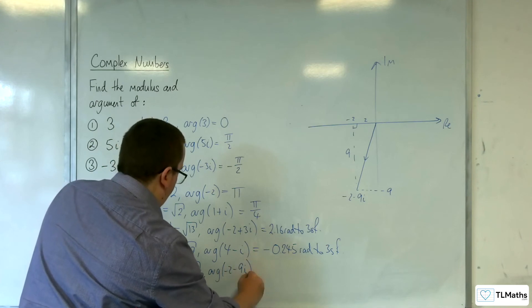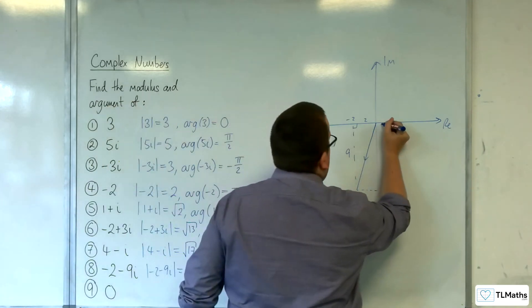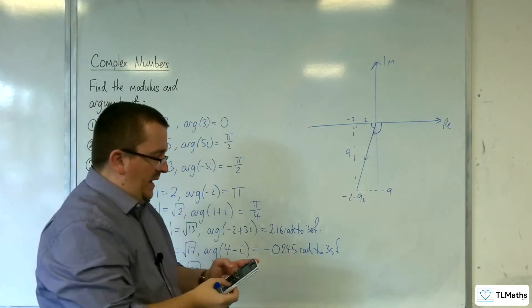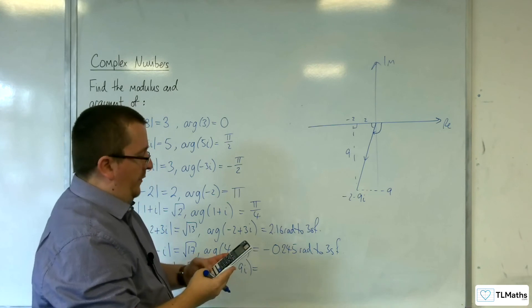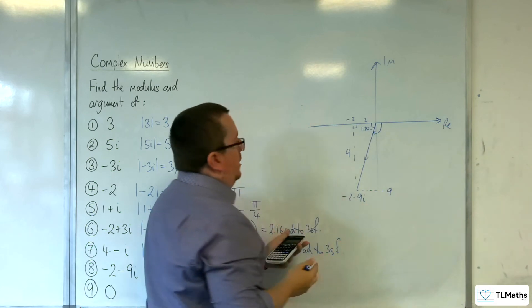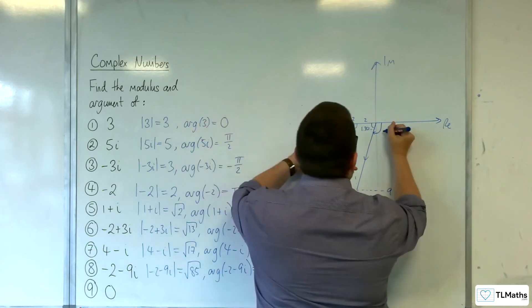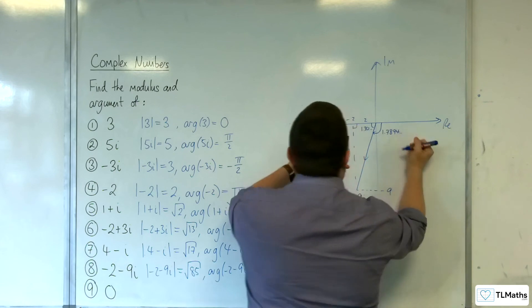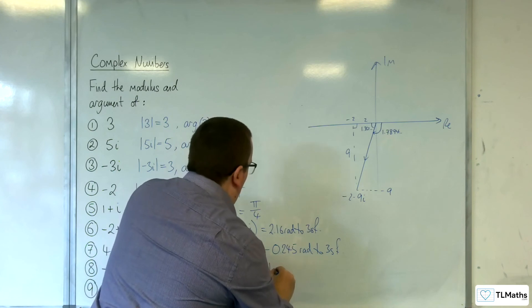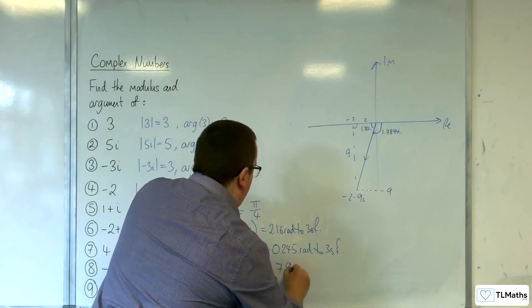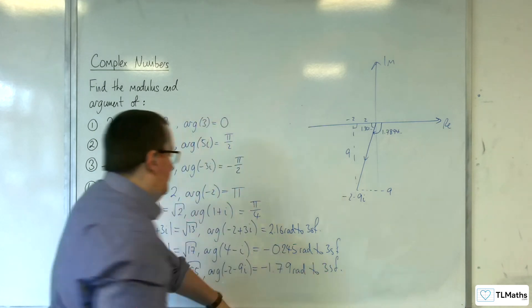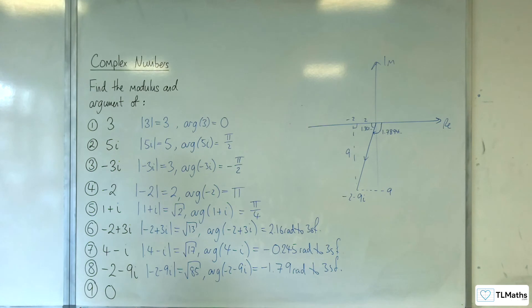The argument is this angle here. If I work out that angle there first, that's going to be the inverse tan of 9 over 2. So that's 1.352, etc. Subtract that from π, and I get this angle: 1.7894. Now, because it's below the real axis, that would be -1.79 radians to 3 sig fig.